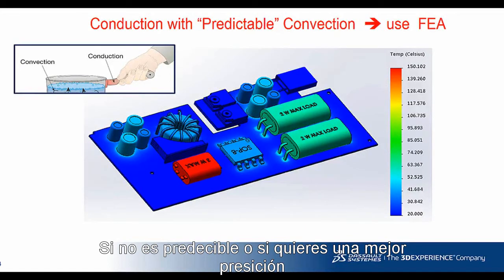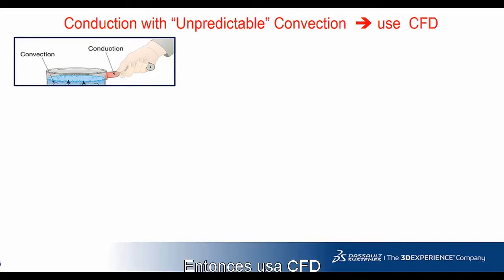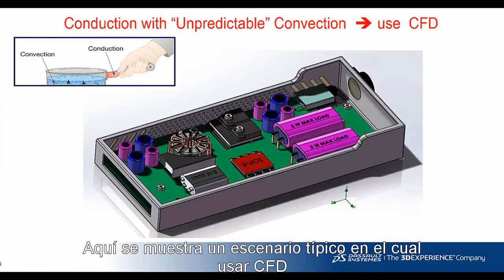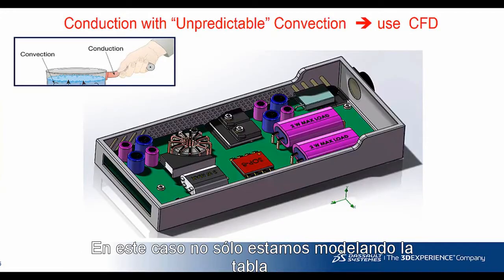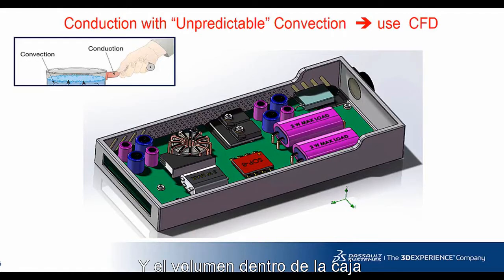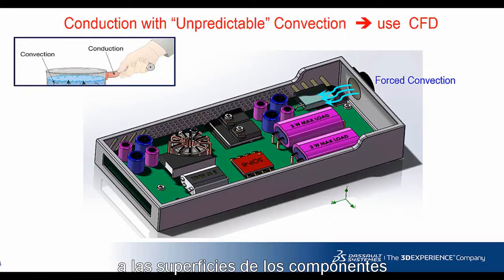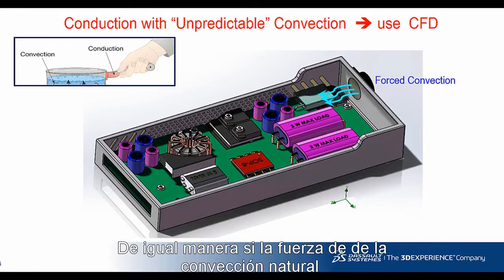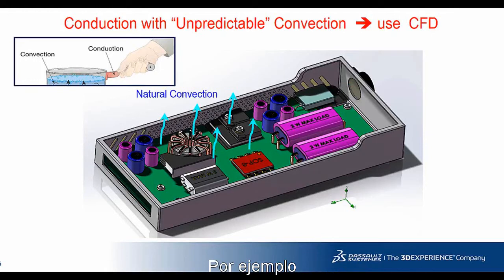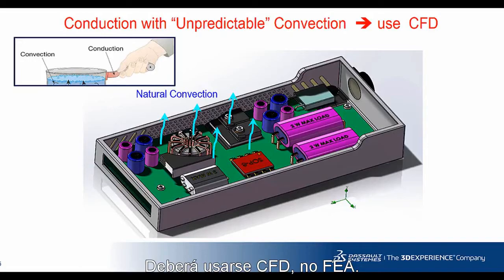If convection is not predictable, or if you want better accuracy by not applying a constant coefficient to all components, then use CFD. Here is a typical scenario of when to use CFD. In this case, we are modeling not only the board, but also the enclosure, the convection source, and the fluid volume within the enclosure. In cases where convection is not predictable, such as forced convection where you don't want to apply a constant coefficient to component surfaces, CFD should be used, not FEA. Likewise, if buoyancy from natural convection is the primary convection mechanism — for example, your motor has no fan — this system is not predictable. CFD should also be used, not FEA.